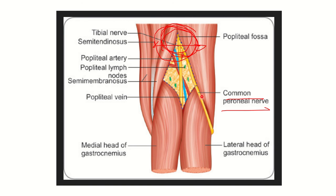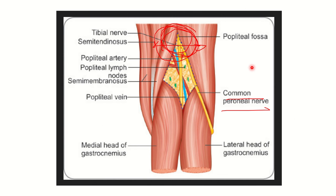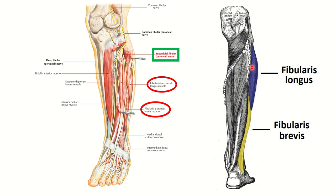The common peroneal nerve descends down to the anterior part of the leg and divides into two parts: the superficial peroneal nerve and the deep peroneal nerve. The superficial peroneal nerve runs downward at the lateral side and supplies two important muscles: one is fibularis longus (peroneus longus) and another is peroneus brevis. These two muscles lie in the lateral compartment of the leg and are supplied by the superficial peroneal nerve.